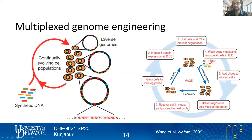One advantage here is that you can introduce as many oligos into the population as you want. Right before I left the Church lab, we were doing an experiment using 15 oligos. It took less than a week to get all 15 mutations into the genome, which is pretty fast. The problem is that typically you don't have a selection here.